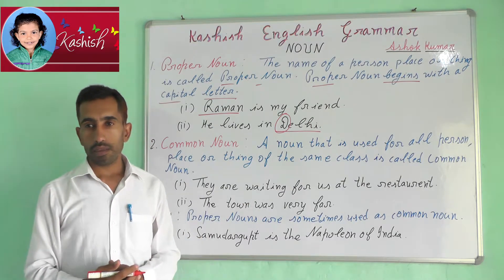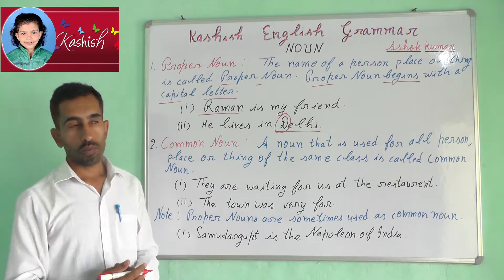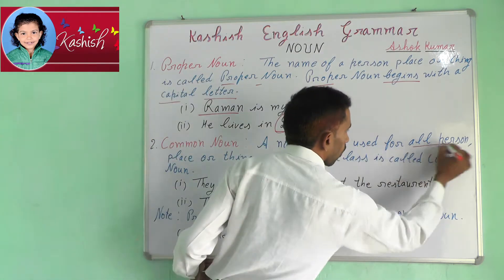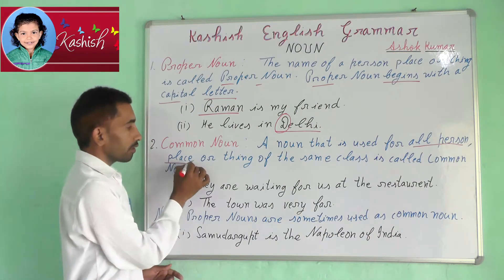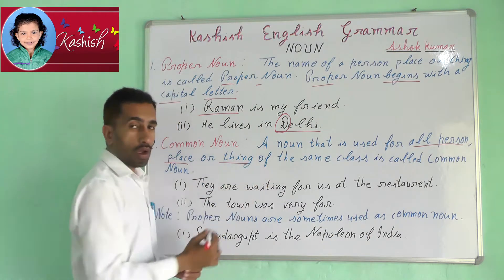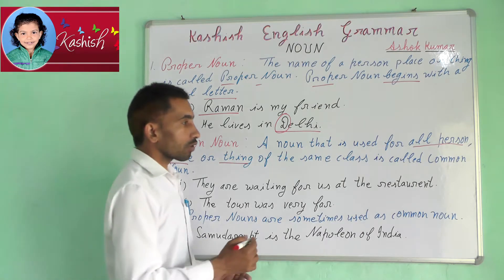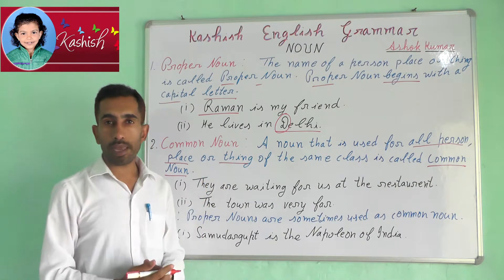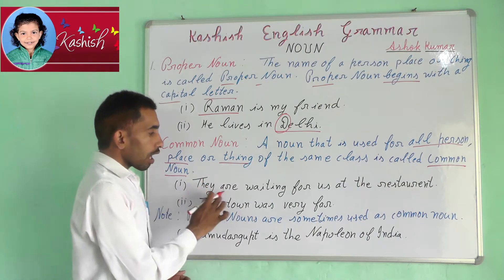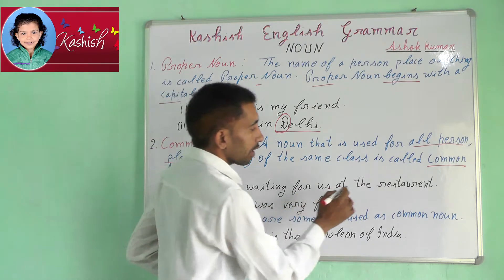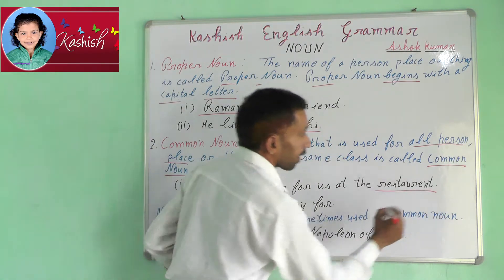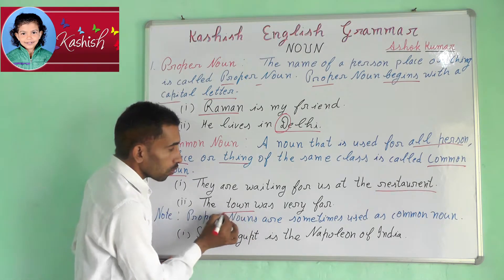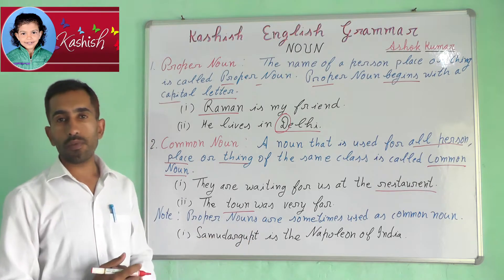Second, Common Noun. A noun that is used for all persons, places or things of the same kind is called a Common Noun. For example, they are waiting for us at the restaurant. The town was very far.